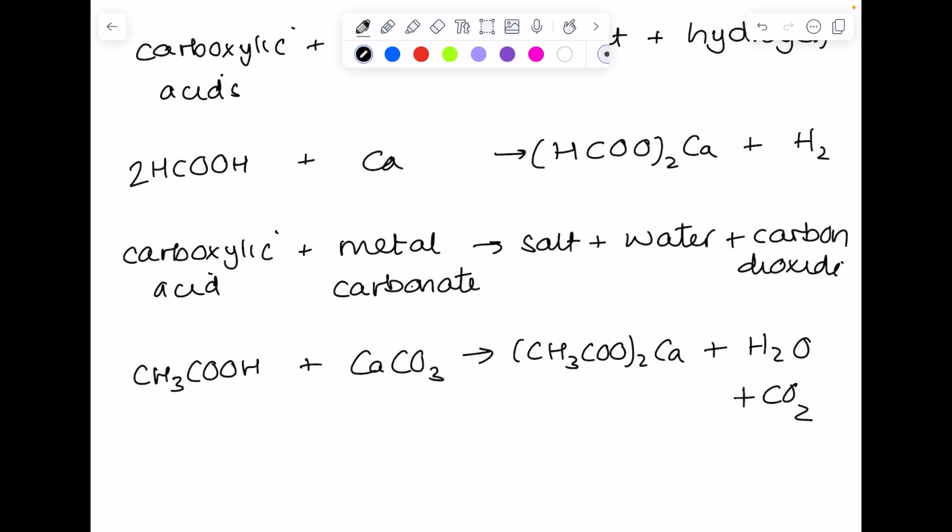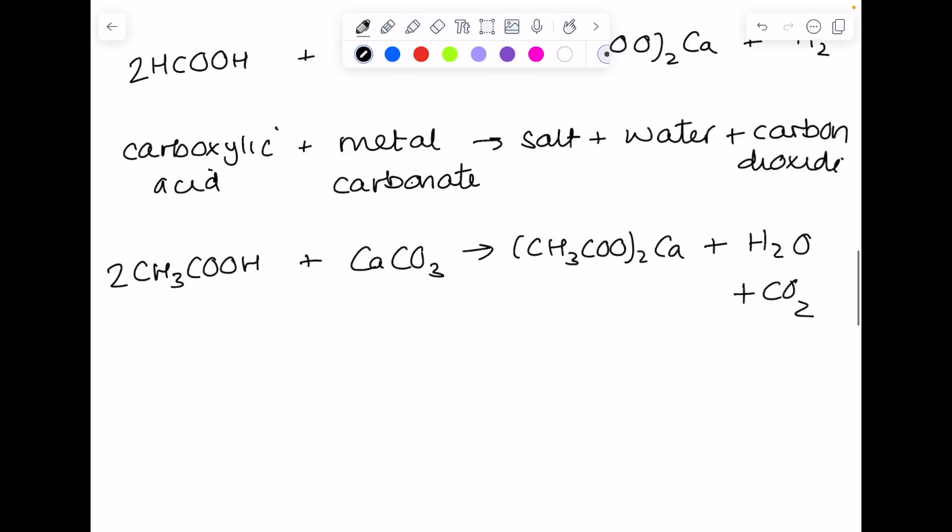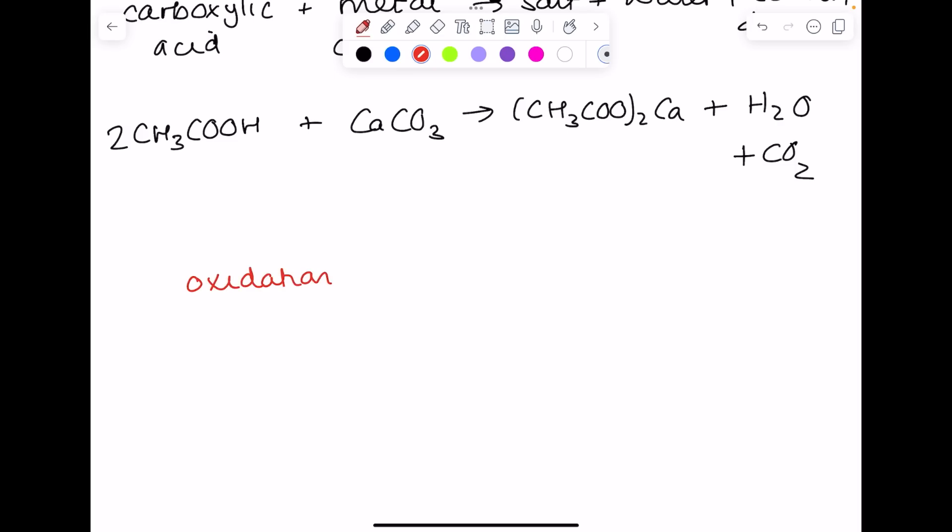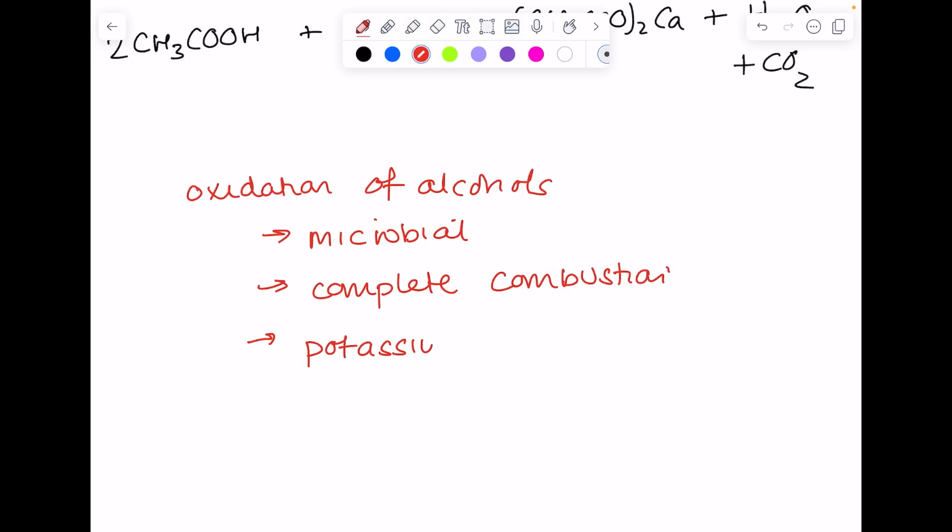Remember with the oxidation of alcohols, you've got microbial oxidation, so that's just using microorganisms in the air. You've got complete combustion, which remember means burning in a plentiful supply of oxygen. Or you've got heating in potassium dichromate 6 under reflux using a sulfuric acid catalyst, and here you'll see a color change of orange to green. That tends to be the oxidation of alcohols people don't remember.